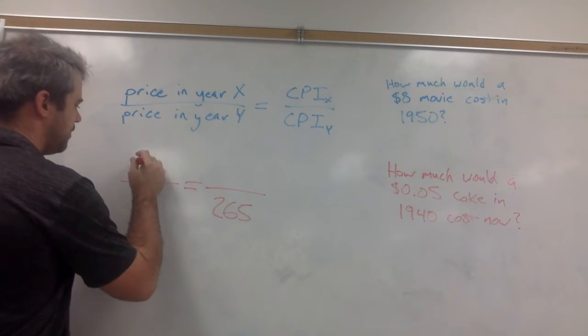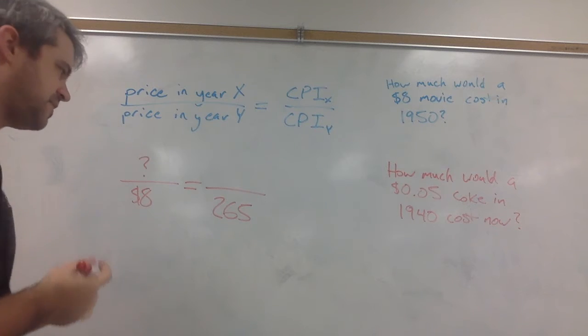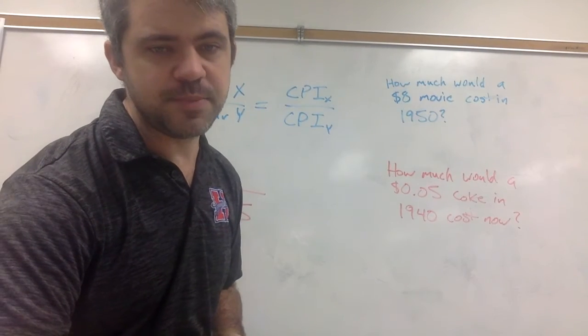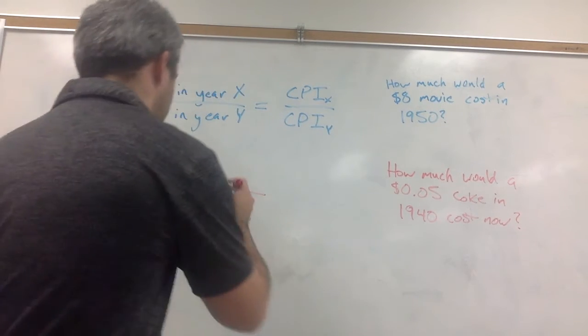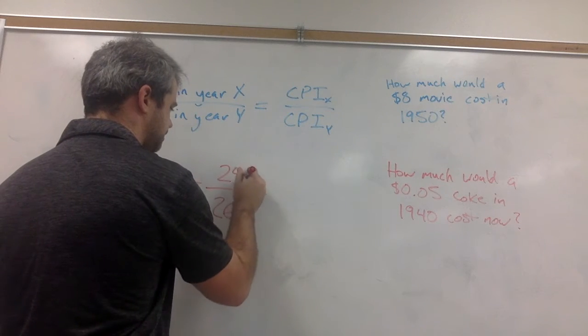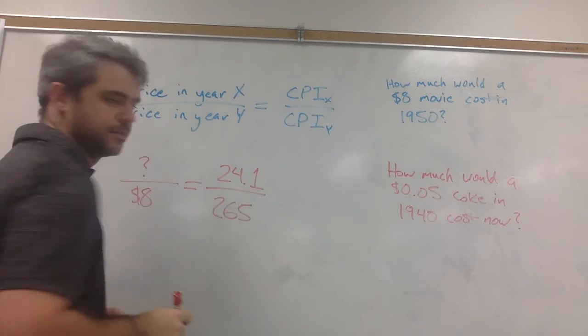Well, we don't know what the price would be in 1950, but we can look up what the CPI was in 1950. It looks like it was 24.1.